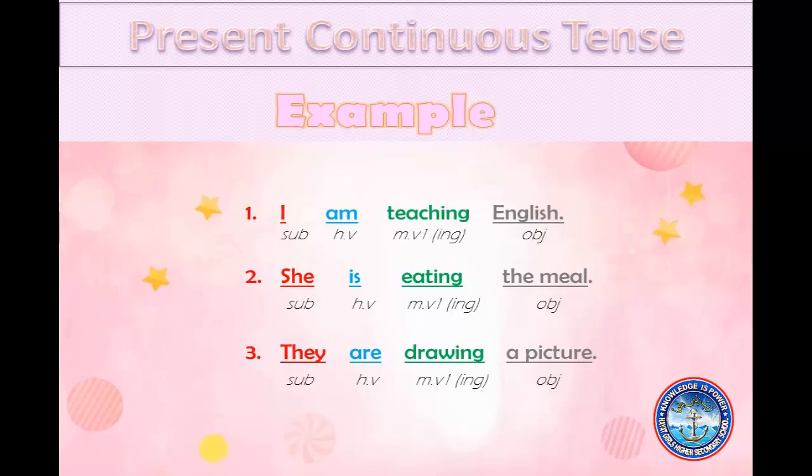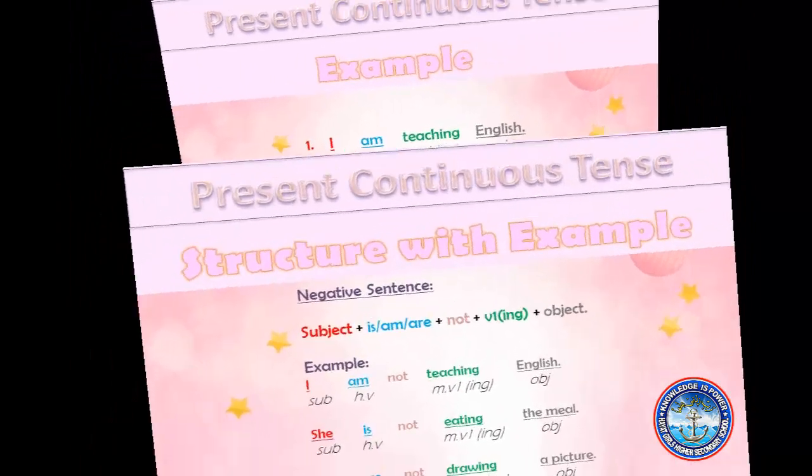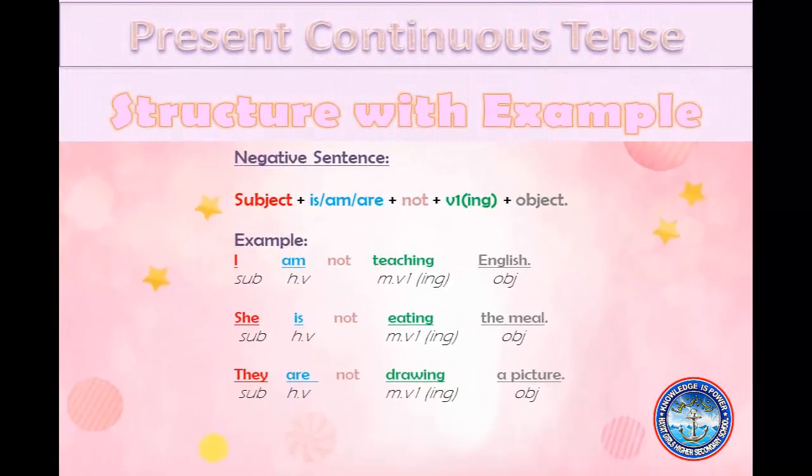Second example: She is eating the meal. With she, we always use is as a helping verb. Third example: They are drawing a picture. They is a plural subject, and with they we always use are as a helping verb.